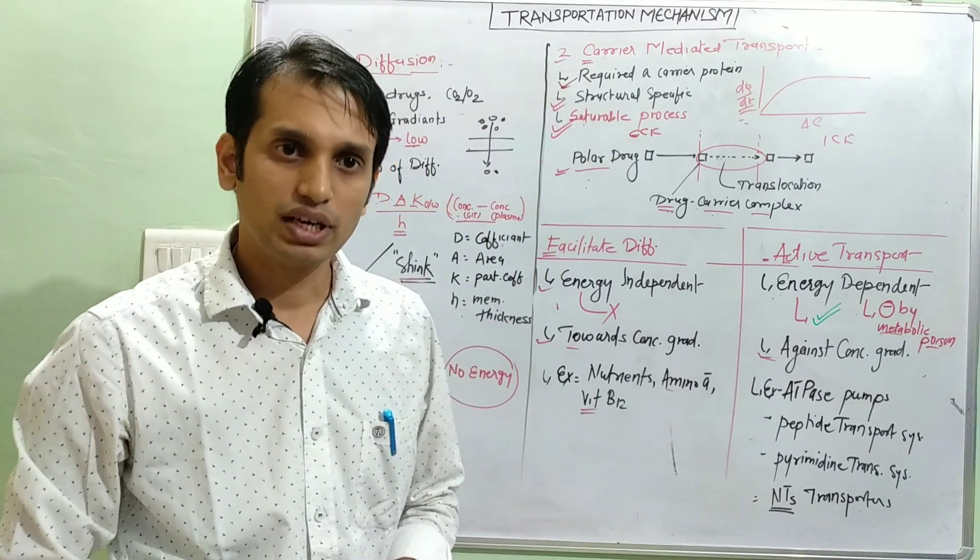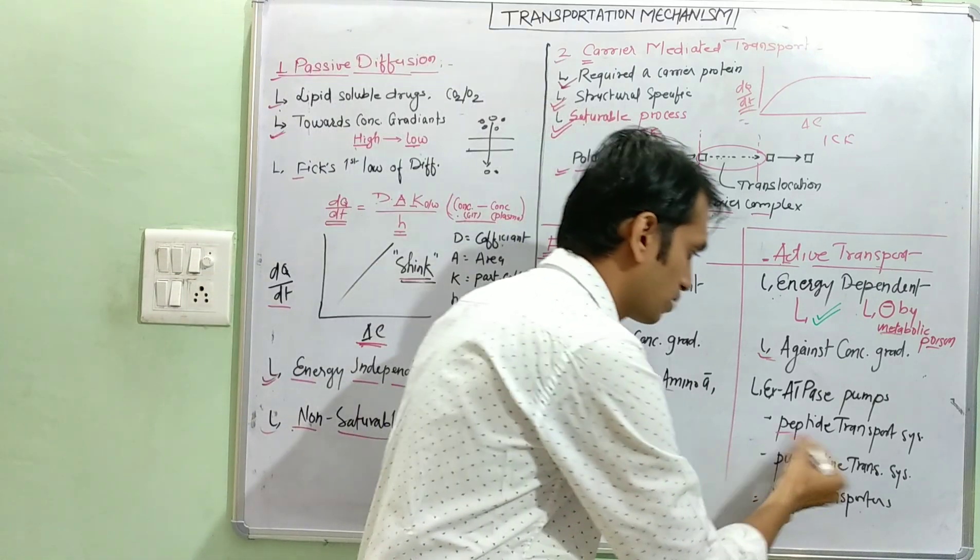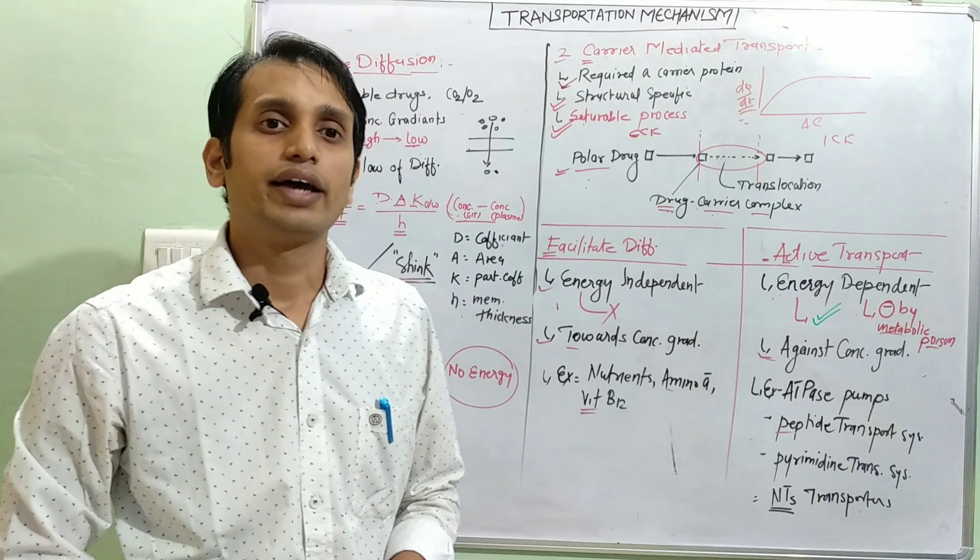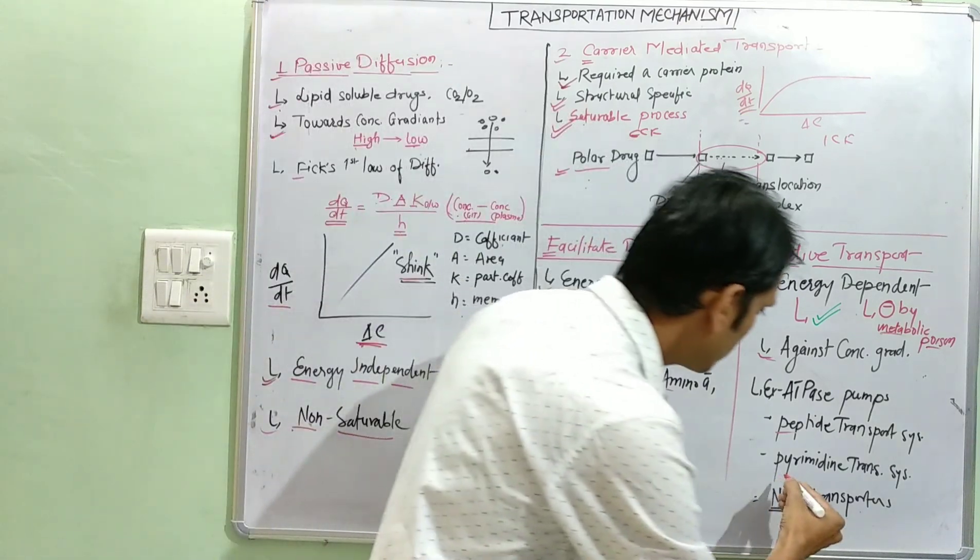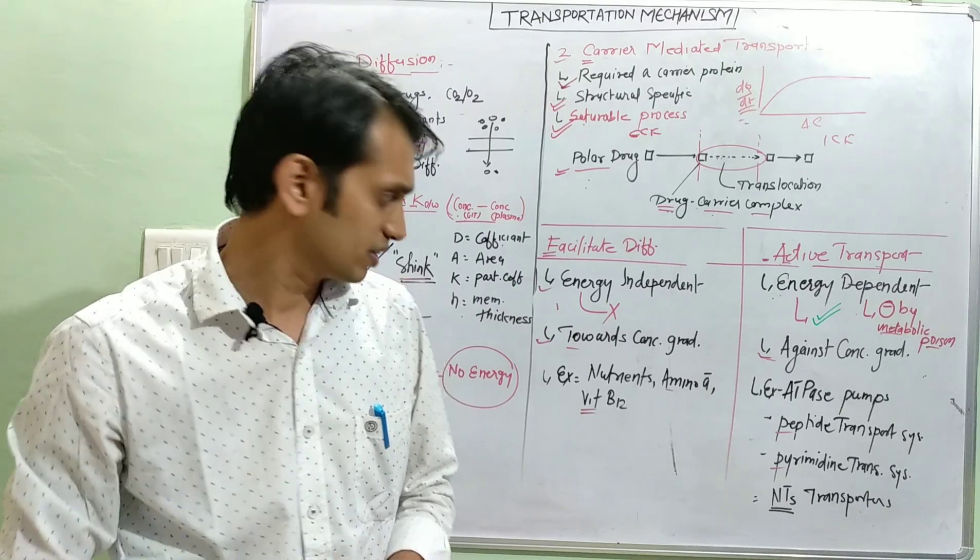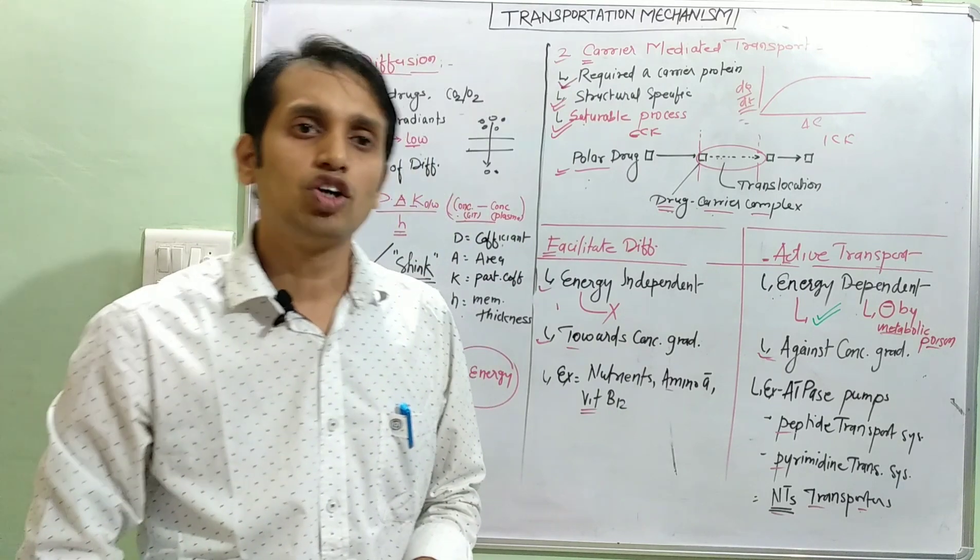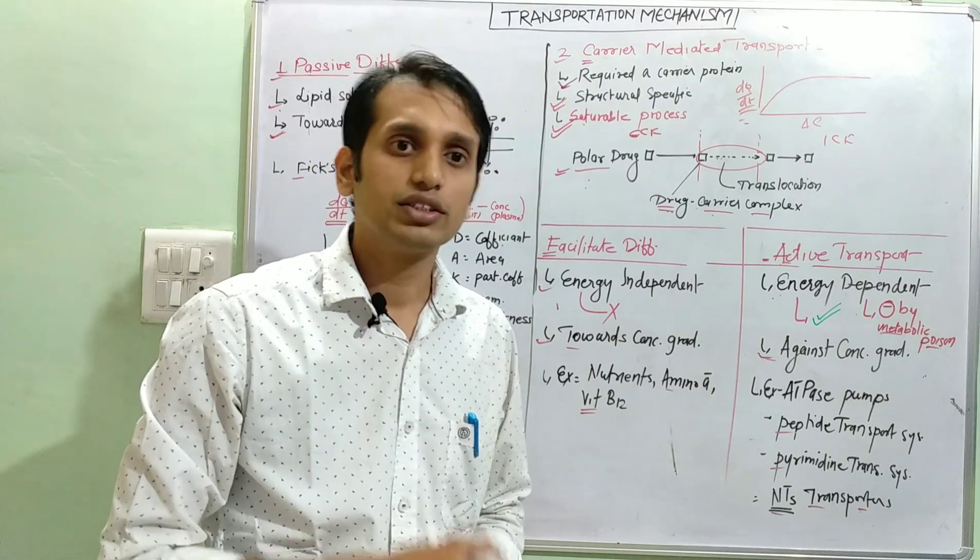And for example, various ATPase pumps like sodium potassium ATPase pump, calcium ATPase pumps, peptide transport system for ACE inhibitor, pyrimidine transport system for various pyrimidine derivative anticancer drugs, and neurotransmitter transport system like NAT, norepinephrine transporter, and serotonin transporter system.